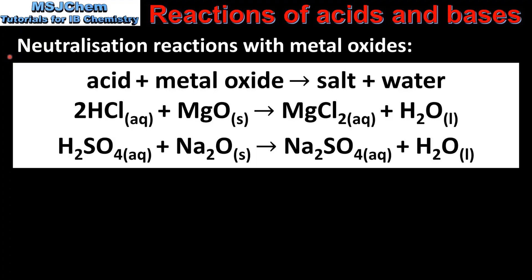Next we look at neutralization reactions with metal oxides. Here we can see the general word equation for the reaction between an acid and a metal oxide. The products of the reaction are a salt and water. In our first example hydrochloric acid reacts with magnesium oxide to form magnesium chloride and water. In our second example sulfuric acid reacts with sodium oxide to produce sodium sulfate and water.